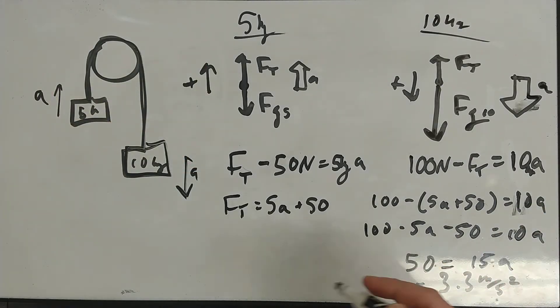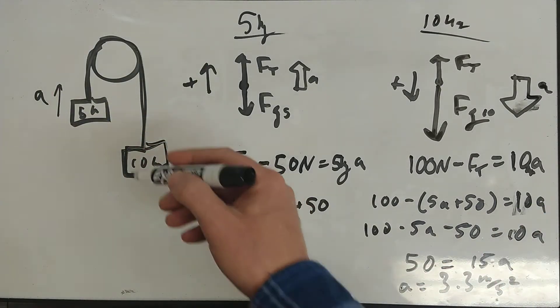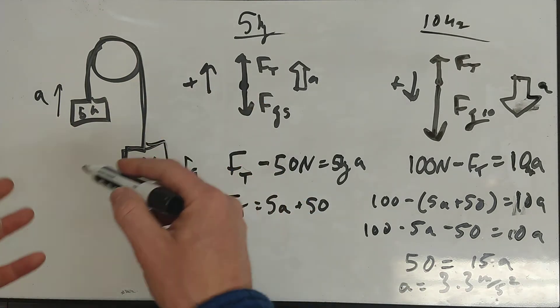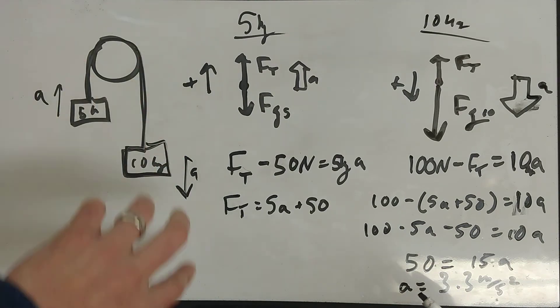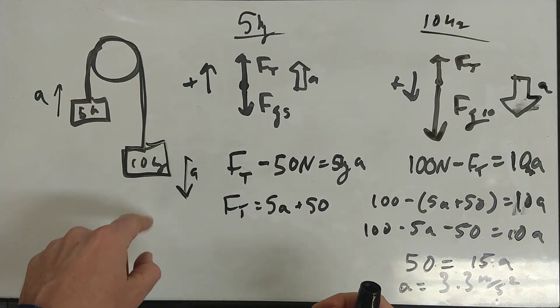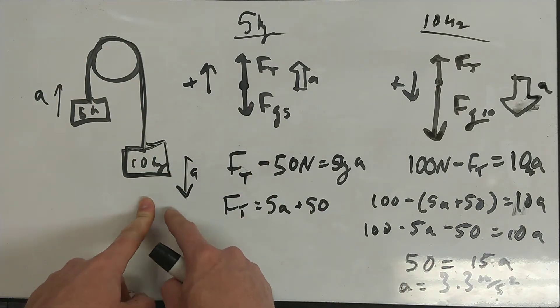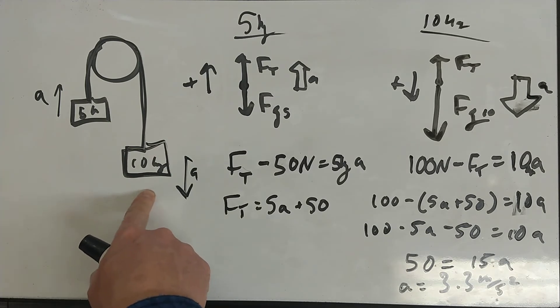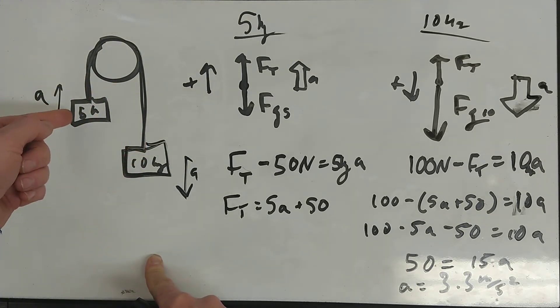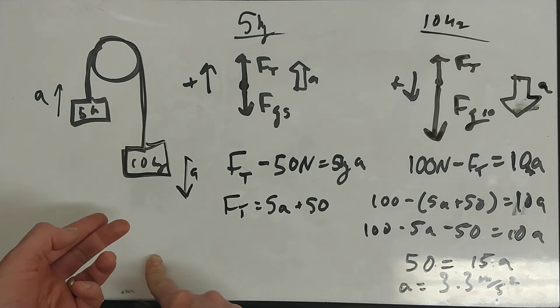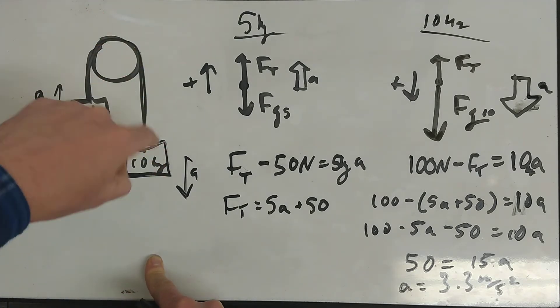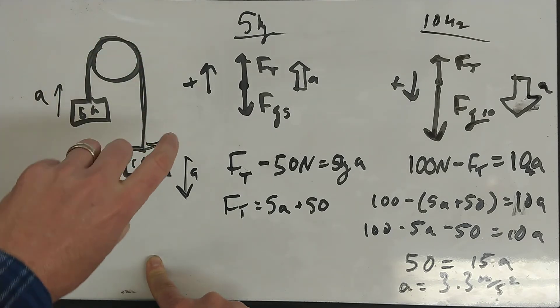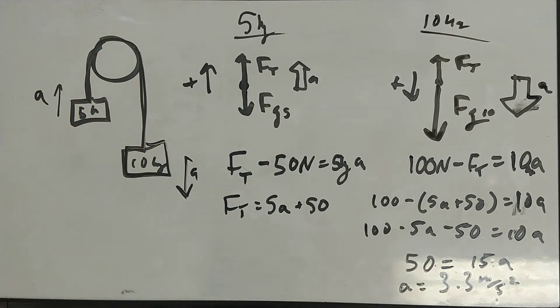So I get A equals 50 over 15, which is 3.3 meters per second squared, which is good because it's got to be something less than G. This just can't go into free fall. This 10 kilogram block, it can't go into free fall because that force is pulling all of the mass along with it. The forces of gravity are competing. If you just looked at the 10 kilogram mass, the force on that, you've got a force trying to pull it down. Well, that's also pulling this one up. So it can't go into free fall. It's got to pull this one behind it. Once it makes it over the pulley, then yes, the whole thing would go into free fall.